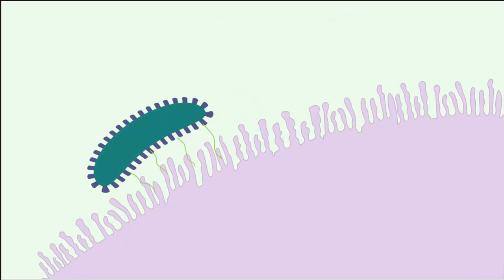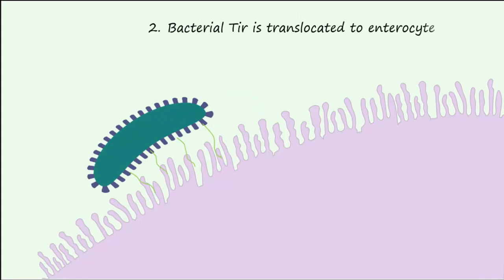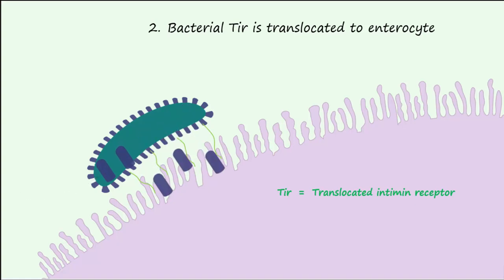The next step is translocation of bacterial TIR. TIR stands for translocated intimin receptor. The bacteria expresses TIR and translocates it to the enterocyte membrane.